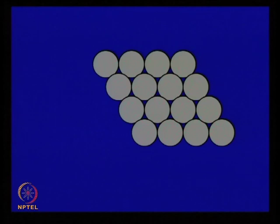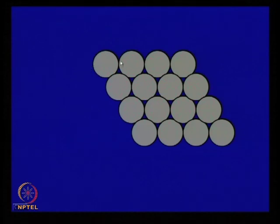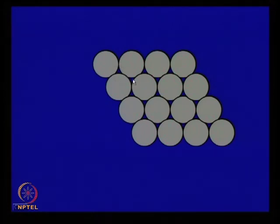Now let us look at the atomic arrangement in a particular plane. When you arrange hard balls in a plane, you automatically get a hexagonal pattern. In that plane, each atom has six nearest neighbors. The next layer of atoms, which has exactly the same arrangement, can only occupy the valleys between the atoms below. If you put an atom in one valley, it actually blocks part of the adjacent valley.